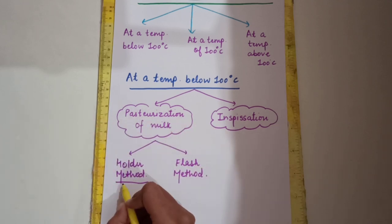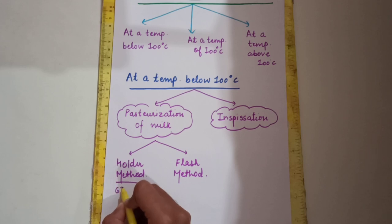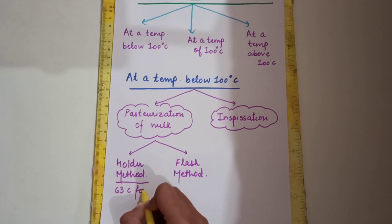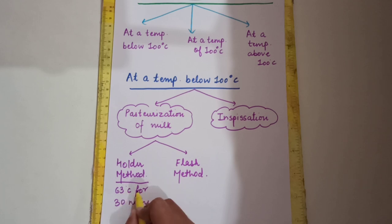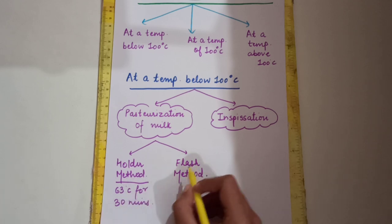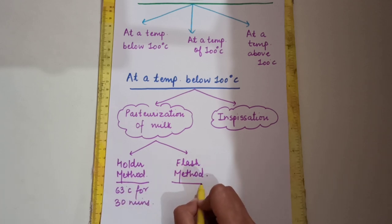In the Holder method, the temperature requirement is 63 degrees Celsius for 30 minutes. Aapko 30 minutes ke liye 63 degree Celsius par use rakhna hai.